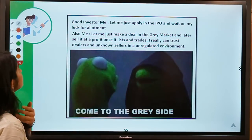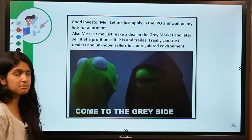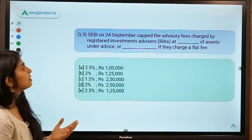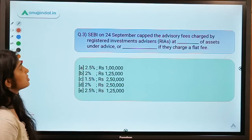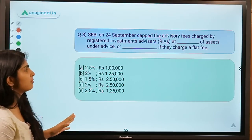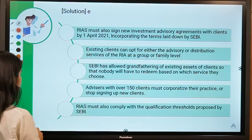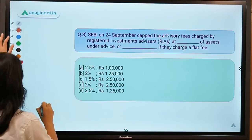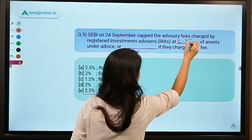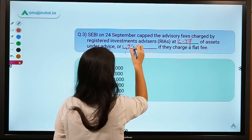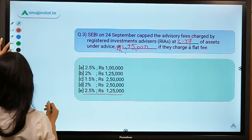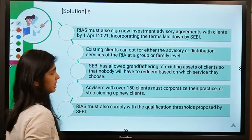Before moving to question three, there's a meme on screen regarding the gray market. Question three asks: SEBI on 24 September kept the advisory fees charged by registered investment advisors at what percentage of assets under advice, or what flat fee? The correct answer is option E: 2.5% of assets under advice, or ₹1,25,000 as a flat fee.